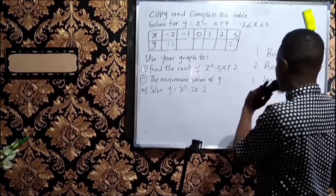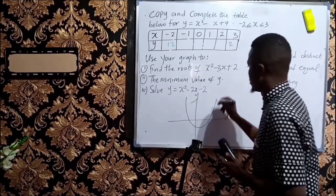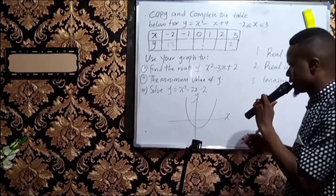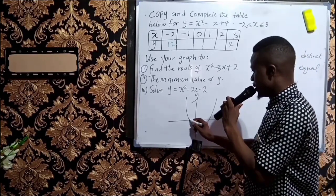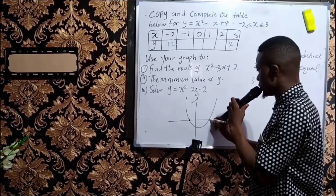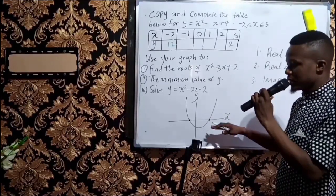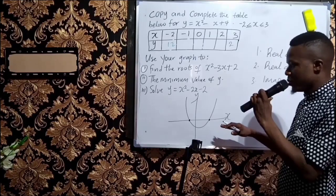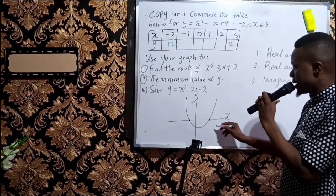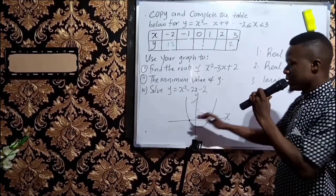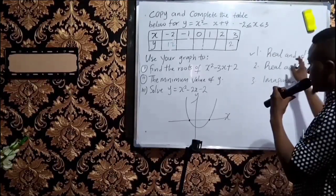For the roots to be real and distinct, let's say you have a curve like this. A clear look at this curve will tell you that it is touching the x-axis at two different points. These are real values of x that satisfy the quadratic equation, and they are at two different points, which means the values of x are two different values. So we say the roots here are real but distinct.